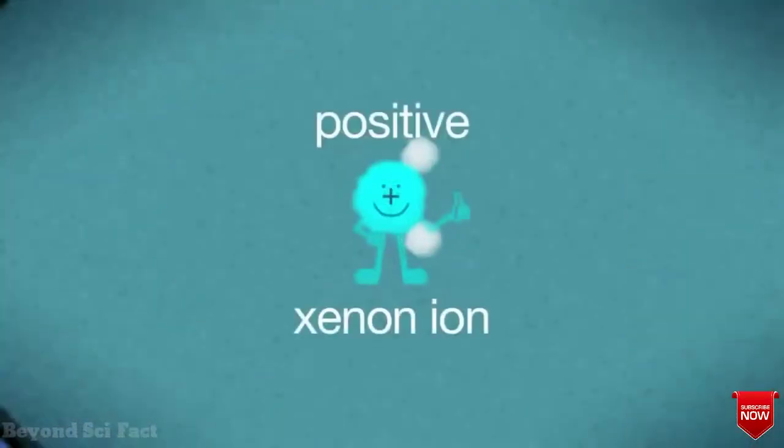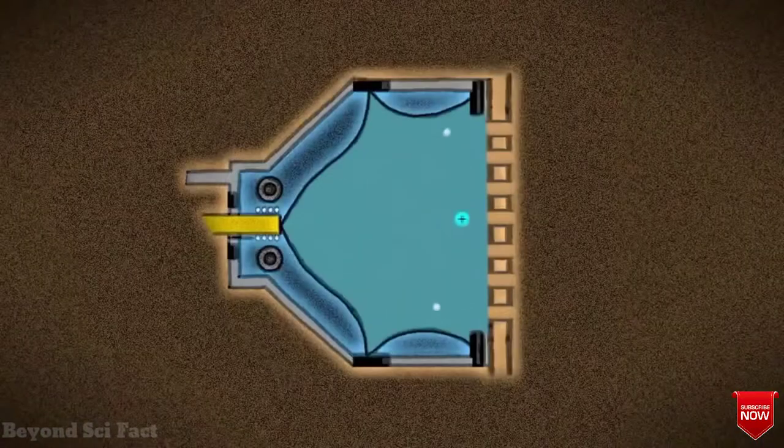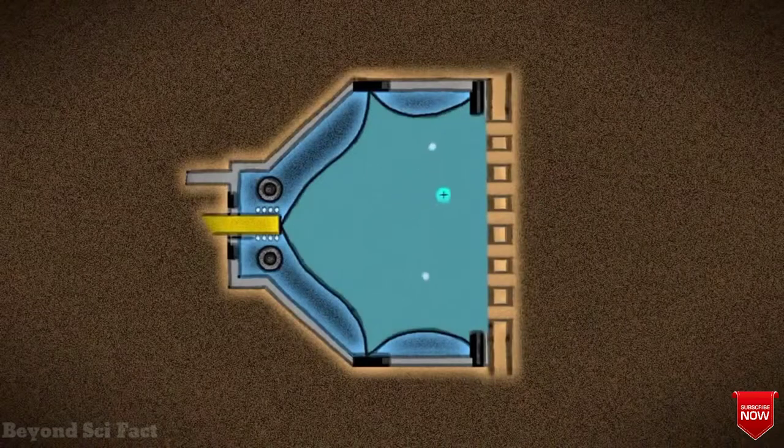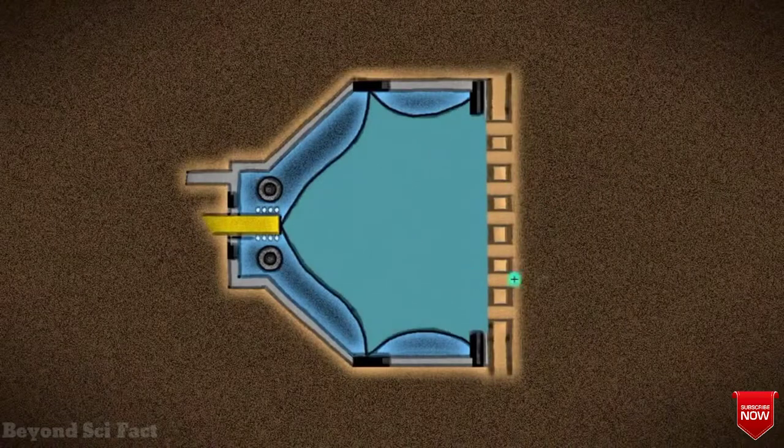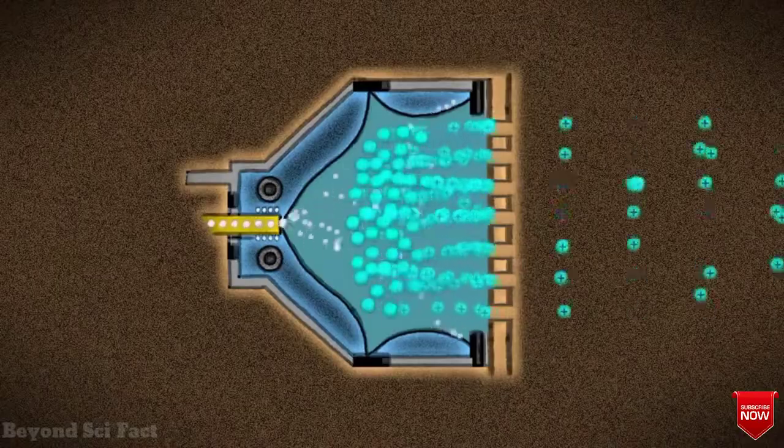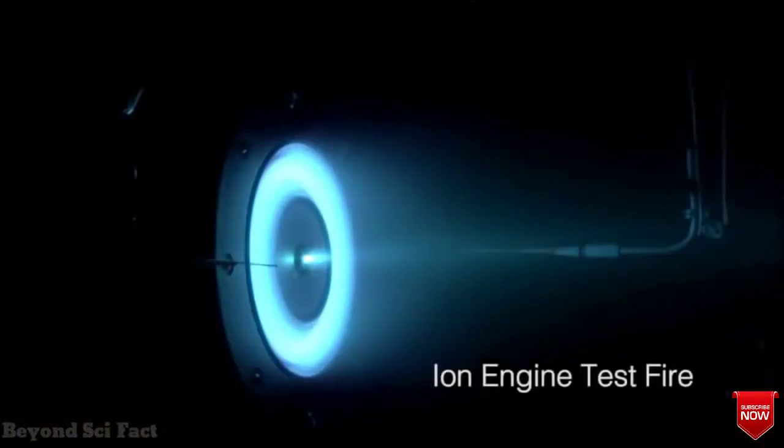This Q-thruster, as outlined by a study that passed peer review last year, takes advantage of the Casimir effect to create propulsion. In such a device, thrust is created using particles pushing off a vacuum.